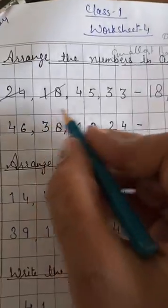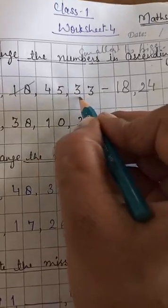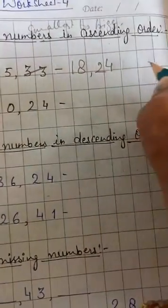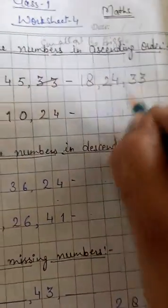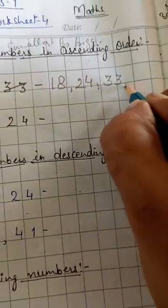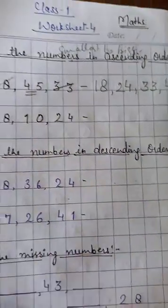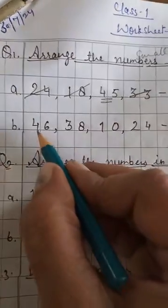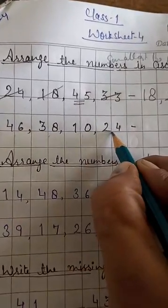Done. The next smallest number between 45 and 33. Yes, 33. 33. And what is the next last number is 45. Now the next one is 46, 38, 10 and 24.